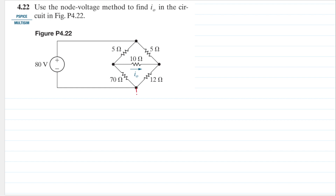Let's assume this bottom node as our ground, so we get the voltage there as zero. This node here is 80 volts, because it is 80 volts from the ground. Let's name this node as node A and this node here as node B. So we only have two unknown nodes.